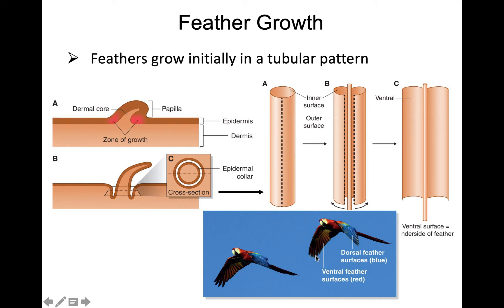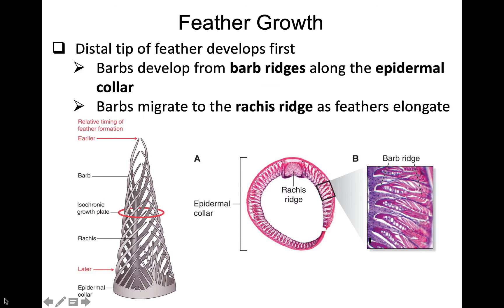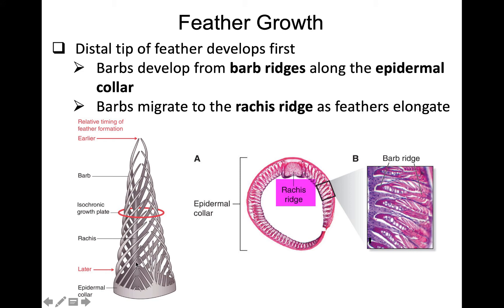The barbs actually form from the epidermal collar along a barb ridge. In a stained slide you can see the barb ridges coming off the epidermal collar. These barb ridges migrate to the rachis ridge, which forms the rachis. As the feather grows, the barbs rotate around from the epidermal collar and migrate to make their connection with the rachis ridge.